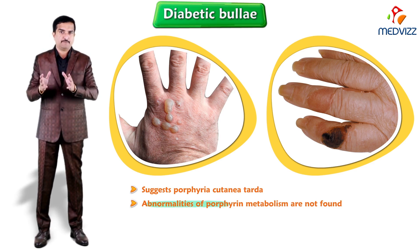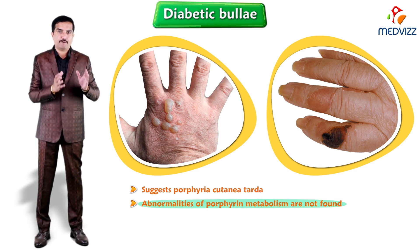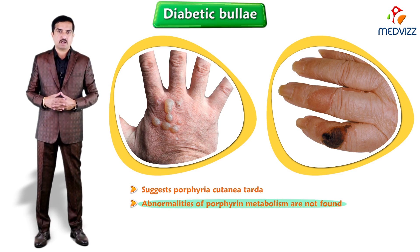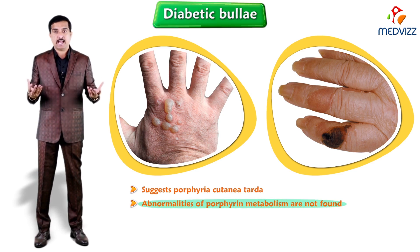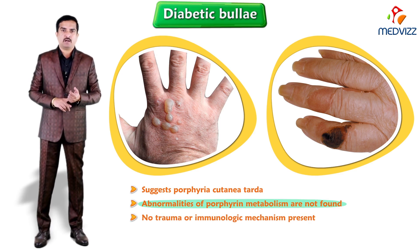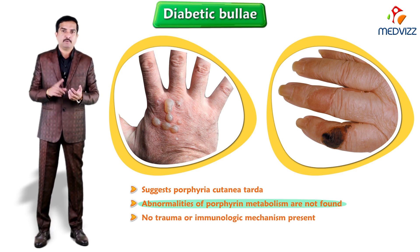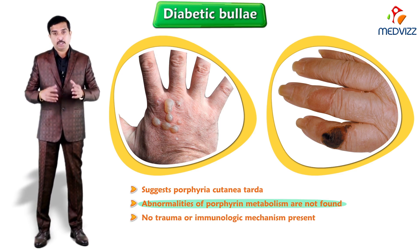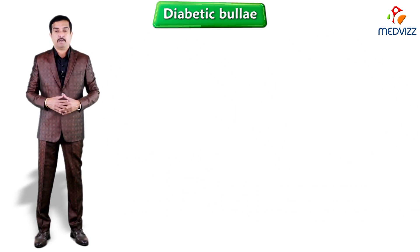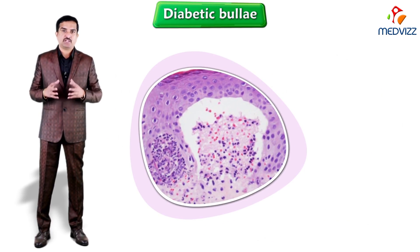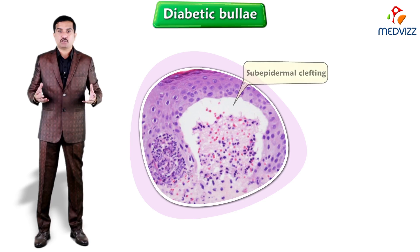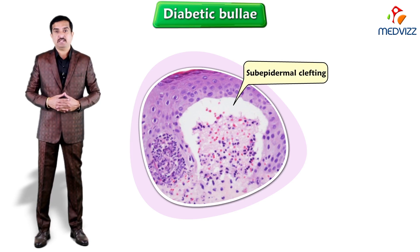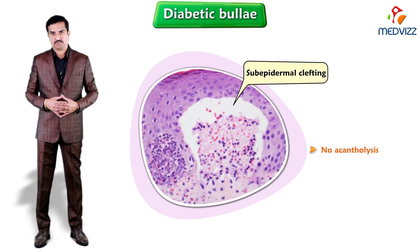This is the differential diagnosis between porphyria cutanea tarda and diabetic bullae. Neither trauma nor an immunologic mechanism has been implicated in the formation of these bullae, but histologically they show intra- or sub-epidermal clefting without acantholysis.